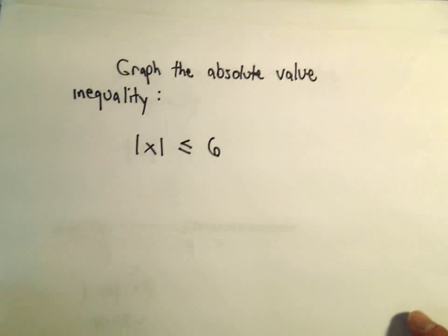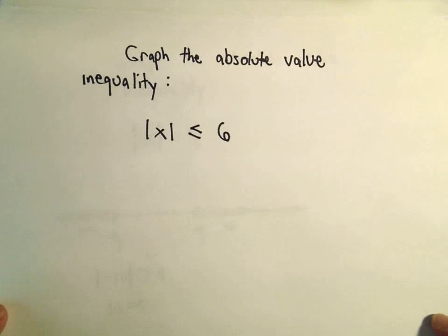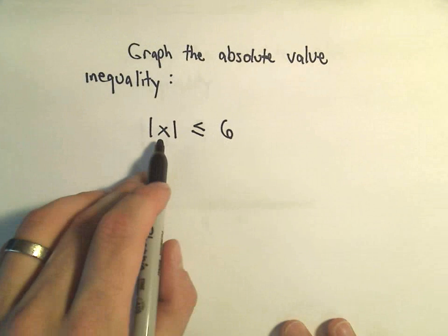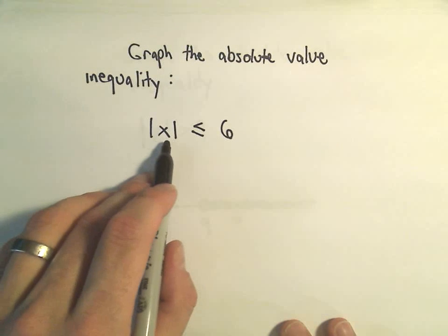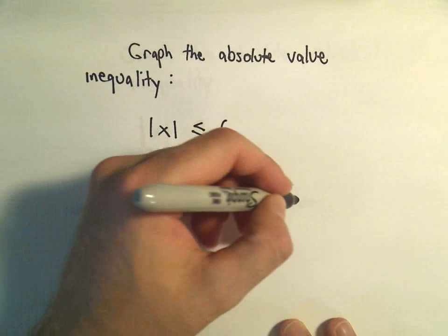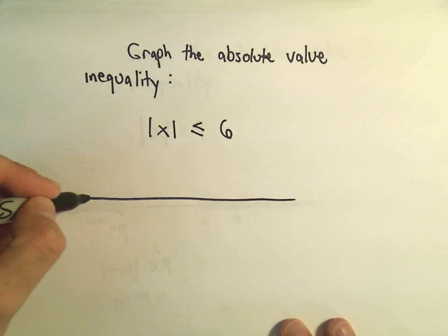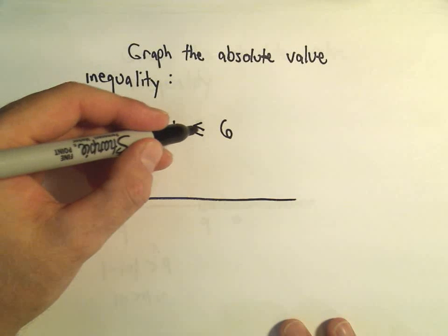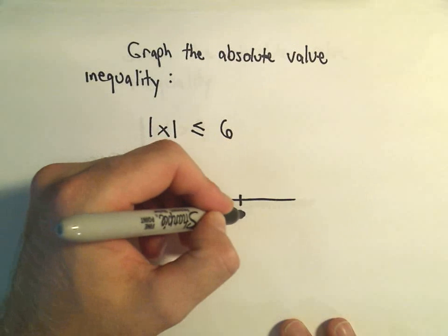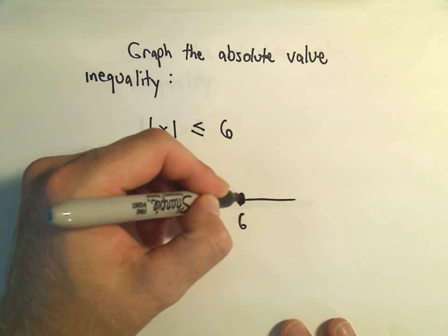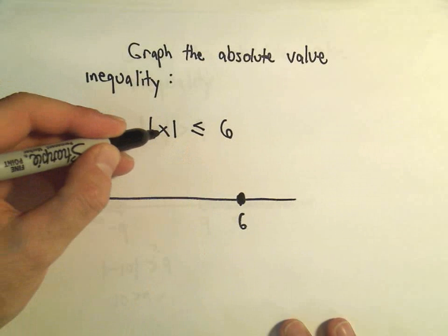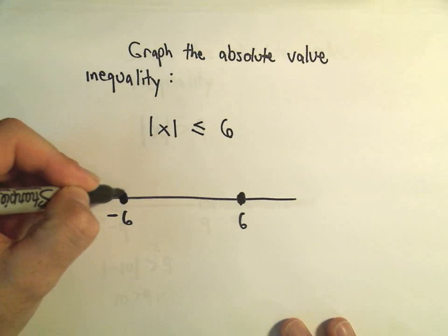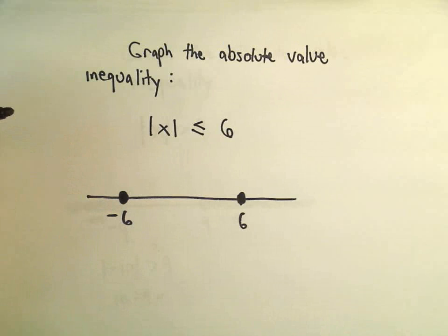Let's do a couple others real quick. The absolute value of x less than or equal to 6. Which numbers can we take the absolute value of and get a number smaller than or equal to 6? Well, the absolute value of 6 equals 6, so that certainly works. The absolute value of negative 6 also equals 6, so that would work too.